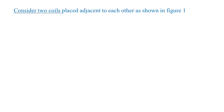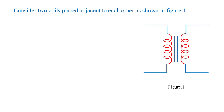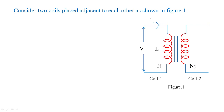Consider two coils or circuits placed adjacent to each other as shown in figure 1, where you have input voltage V1 supplying current I1 in coil N1 turns, which is going to give a self inductance value L1. And if coil 2 is placed adjacent to coil 1 and current is flowing in coil 1, then what is the value of inductance which is going to develop in coil 2? That is called mutual inductance, and that is what we are going to see by considering these two coils.